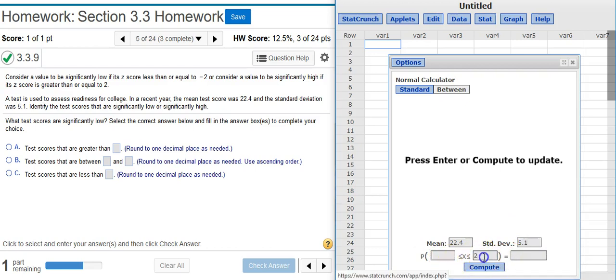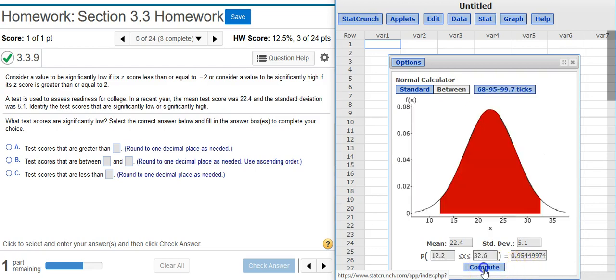I'm going to clear out these values in the probability fields, and then here I'm going to paste that value that we had before. Now, when I hit Compute, I've got my distribution, and you can see the bounds here. Anything less than this left bound is going to be significantly low. Anything more than this right bound is going to be significantly high. And those numbers are given to me right here in the probability field.